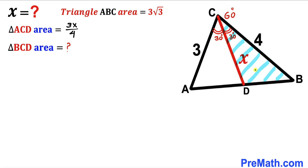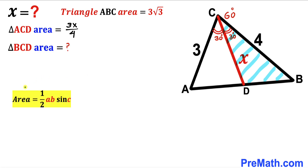Now let's focus on triangle BCD and calculate its area. Using the same area of a triangle formula, the side lengths for this triangle are X and 4, and the angle between them is 30 degrees.